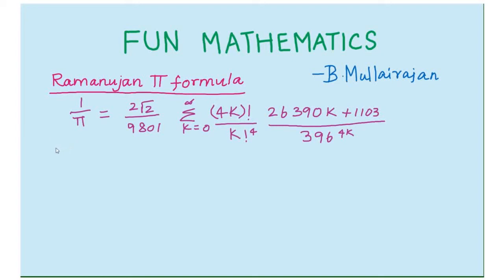Today we are going to see the Ramanujan Pi Formula for the Fun Mathematics Program. The formula states: 1 by Pi is equal to 2 root 2 by 9801, multiplied by Sigma k equals 0 to infinity of 4k factorial divided by k factorial to the power 4, times 26390k plus 1103, divided by 396 to the power 4k.